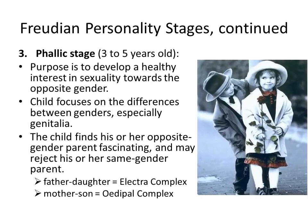The third stage of Freud's personality development is the phallic stage, running from ages three to five. Its purpose is to develop a healthy interest in sexuality towards the opposite gender. This doesn't mean a three-year-old has sexual feelings — rather, this is when children begin to notice differences between genders, especially genitalia. Around ages four and five, kids start to experiment and play doctor. They're not looking at it sexually so much as noticing 'you're totally different than me,' which can translate to finding their opposite-gender parent fascinating.